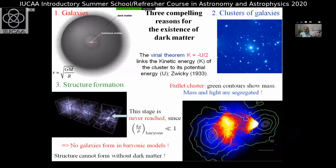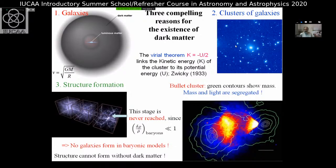There are three compelling reasons for the existence of dark matter. The first and foremost comes from galaxies — we believe galaxies are surrounded by a halo of dark matter. The second comes from clusters of galaxies, the largest gravitationally bound concentrations in the universe, which give very unambiguous results in favor of dark matter. The third is structure formation: if there is no dark matter, the final stage of structure is never reached — the universe today would look frothy but there would be no galaxies.